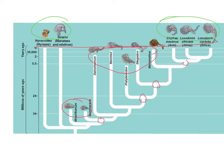This phylogenetic tree shows an ancestral link between manatees and elephants. Manatees are aquatic creatures — they kind of look like a seal or walrus, but they're herbivores living in warm water. Many people think manatees are closely related to seals and walruses, but evolutionarily they actually have a closer relationship to the elephant, based on their ancestral lineage.